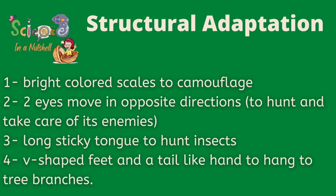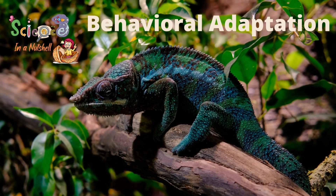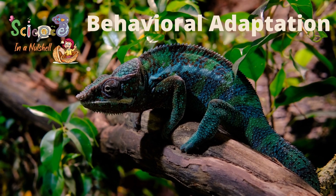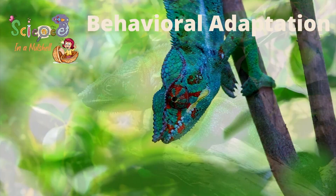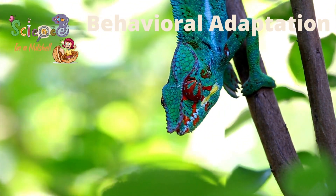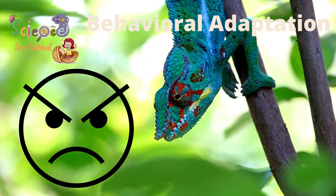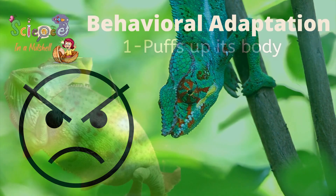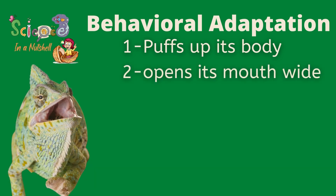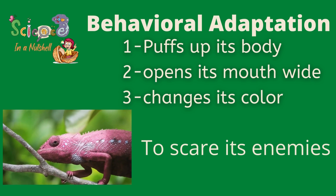That was everything you need to know about the structural adaptation for the panther chameleon. Now let's see what the behavioral adaptation is for the panther chameleon. When a chameleon finds itself in danger, it doesn't have teeth or claws for defense, but it has one last trick to scare its attacker: number one, it puffs up its body with air so it can be as big as possible to scare its attacker; number two, it opens its mouth very wide; and it changes the colors of its scales.